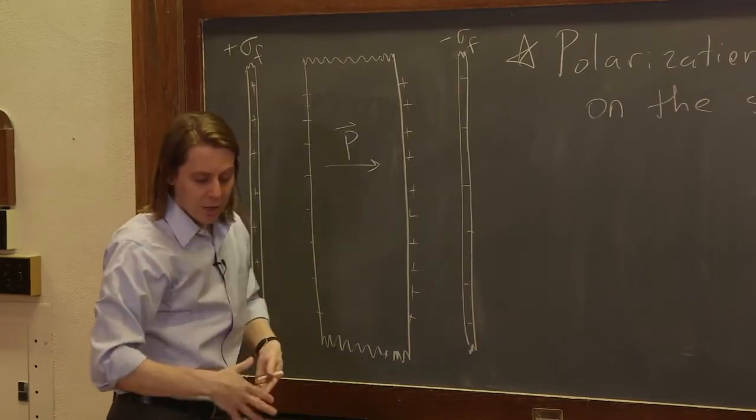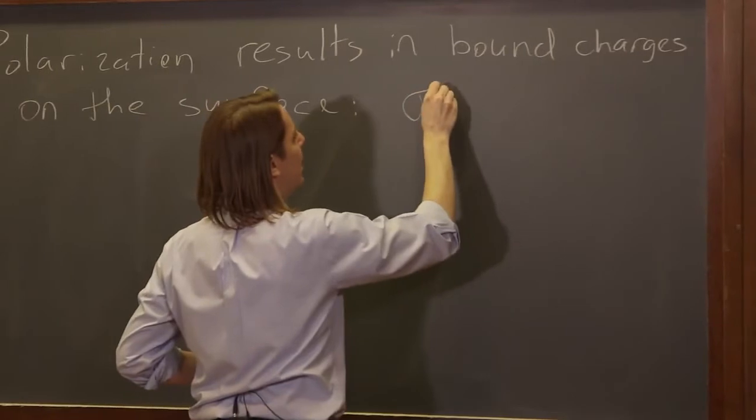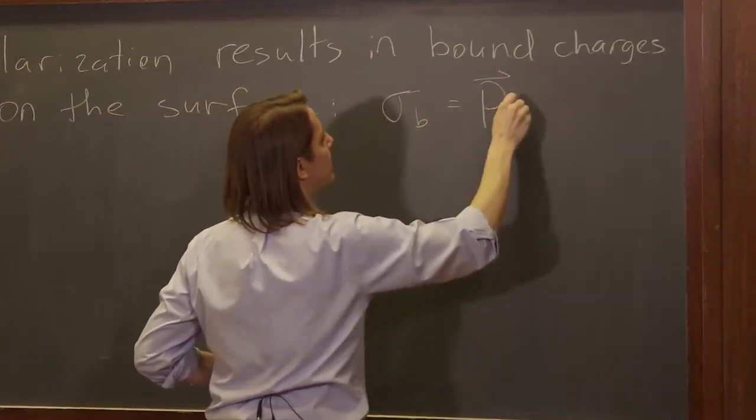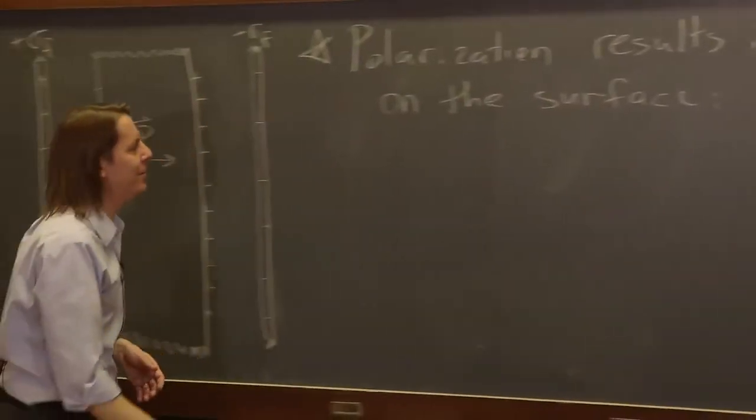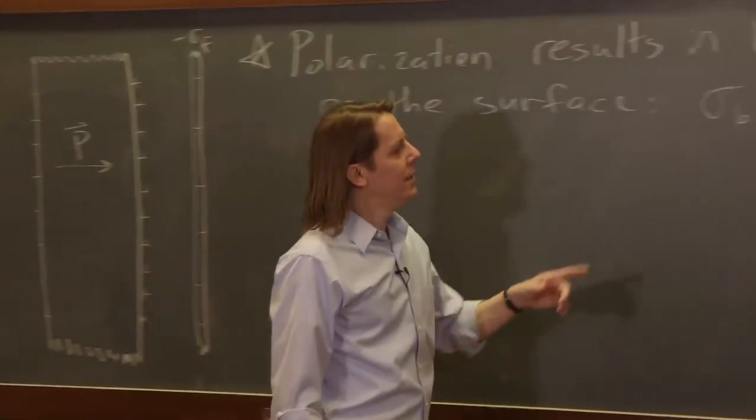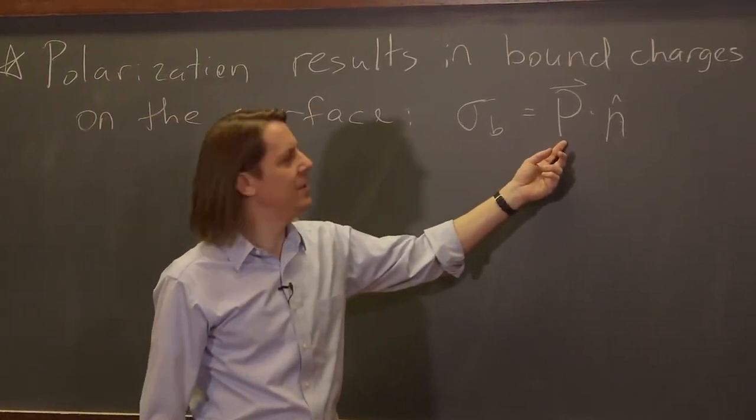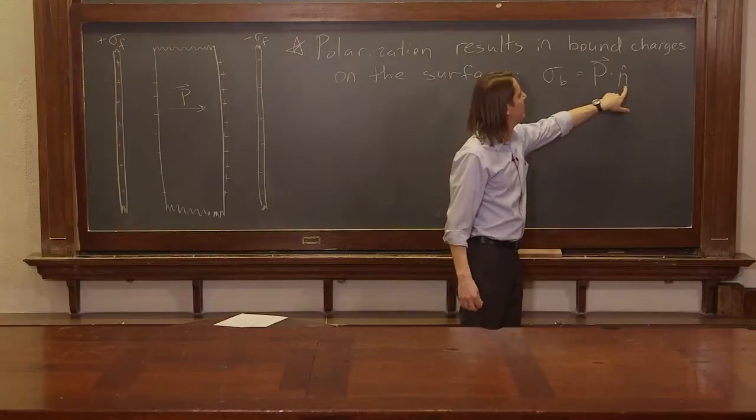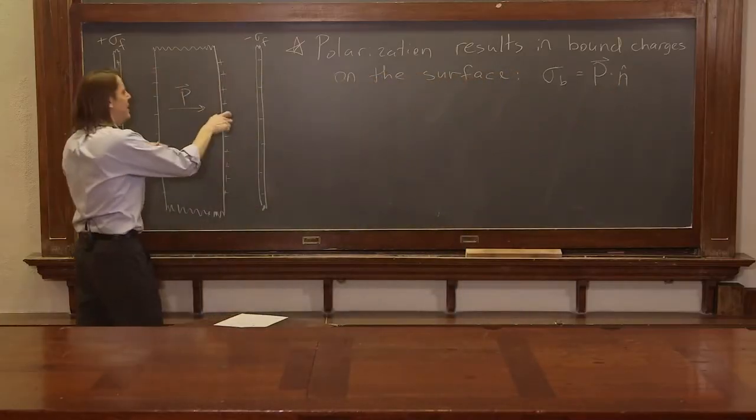So mathematically, what that is, is you get sigma bound. You get a charge density on the surface, sigma bound. And it's equal to the polarization field dotted with the normal unit vector of the surface. Because remember, what was our unit for the polarization field? It was coulombs per meter squared. It has the unit of a charge density. So here, we're just saying that you've got to take the dot product between the P and the N.